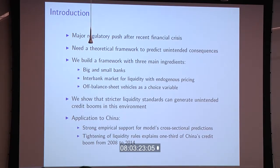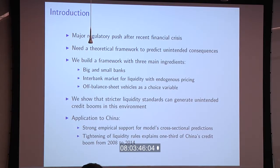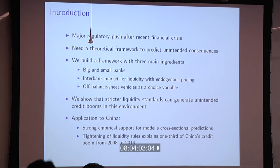The third ingredient is off-balance sheet vehicles — think of these as asset-backed commercial paper conduits that finance themselves shorter-term than the assets they invest in, offering either implicit guarantees or backup lines of credit to conduits, as we saw in the crisis. These off-balance sheet vehicles are there to capture accounting maneuvers that banks can use — legal ones — to make their balance sheets look more favorable to the regulator without actually changing the nature of their activities.